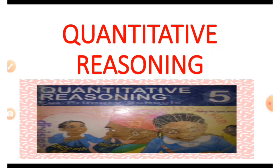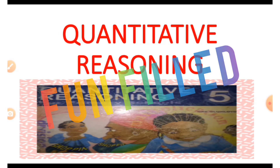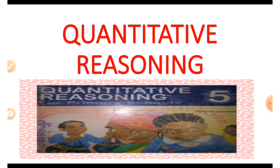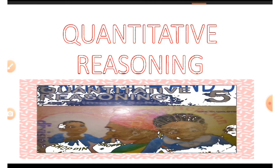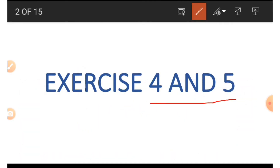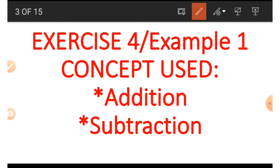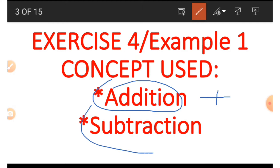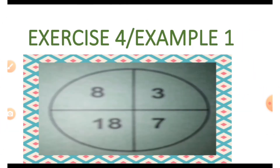Hello great minds, welcome to another formal lesson in quantitative reasoning. In this lesson we are going to be looking at two exercises in our book: exercise four and exercise five. We are going to look at the use of basic operations — specifically addition and subtraction.